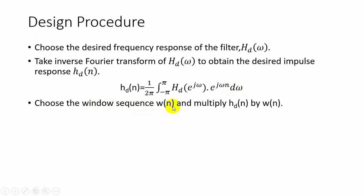Here we are going to choose the rectangular window. The rectangular window is given by w_r of n which is equal to 1 if n lies between 0 to n-1, 0 elsewhere.